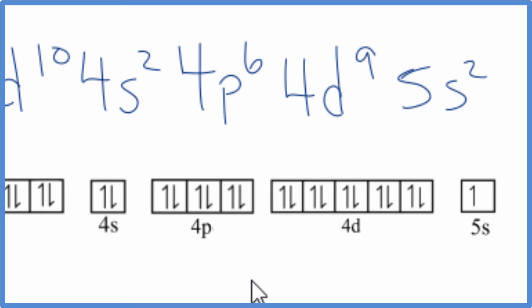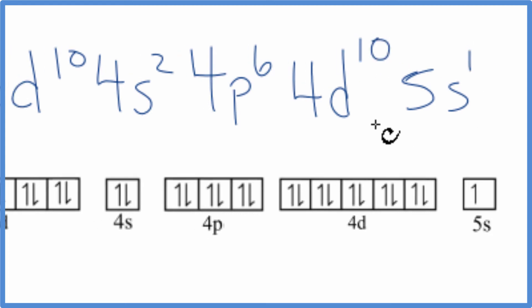We could fill this out. Now this is a full d orbital. This is full, and now we have one here. So we should update these numbers here. Now we have that 3d¹⁰ and we have the 5s¹.